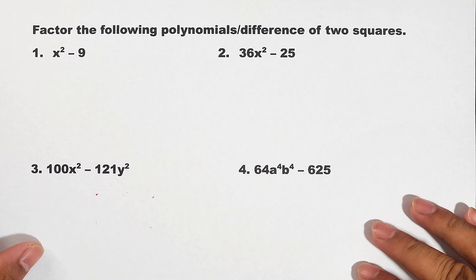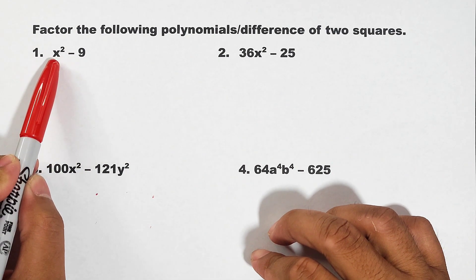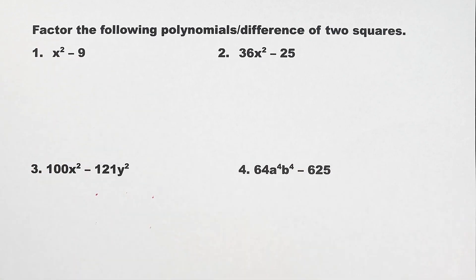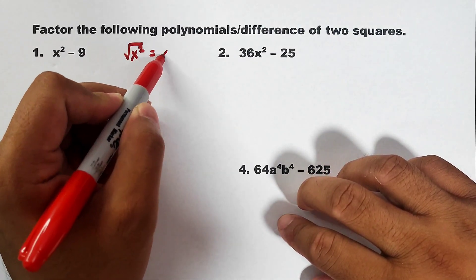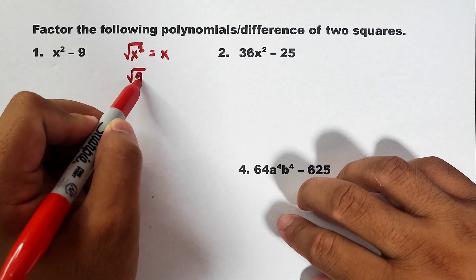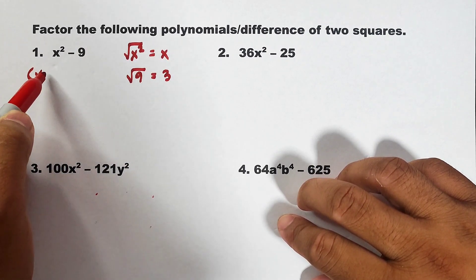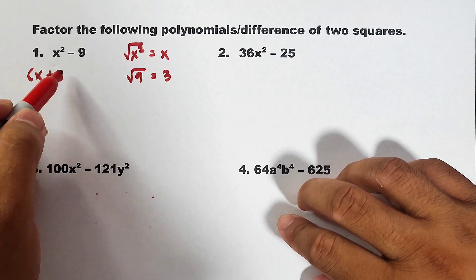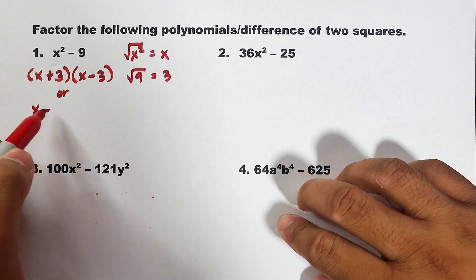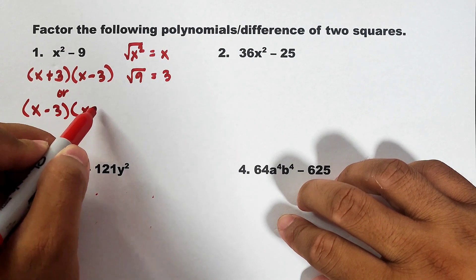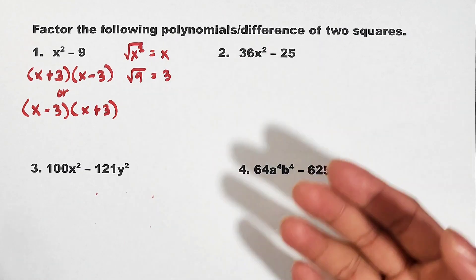Now let's try solving with these examples. In number one we are given x squared minus 9. x squared is a perfect square, as well as 9, and there's a minus in the middle. So what are the factors? The square root of x squared is x, and the square root of 9 is equal to 3. So the factors are x plus 3 times x minus 3, or equivalently x minus 3 times x plus 3. These are the possible factors of x squared minus 9.